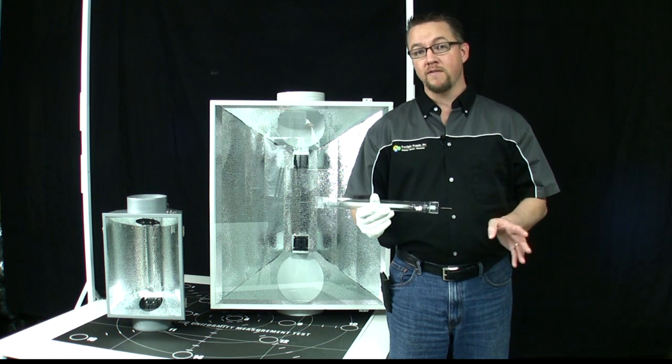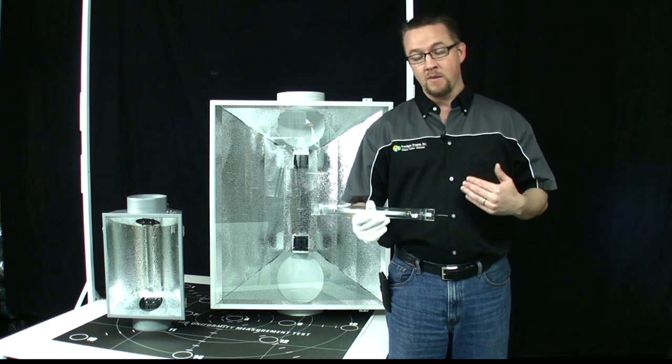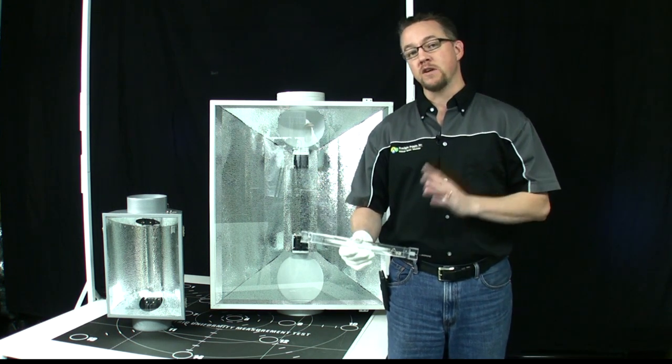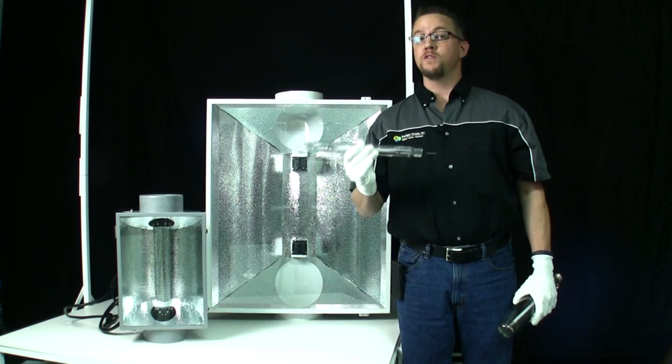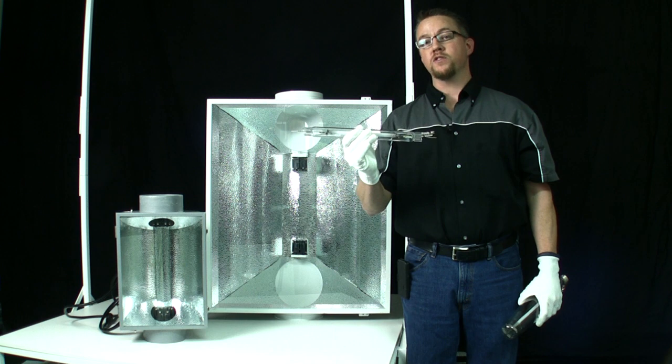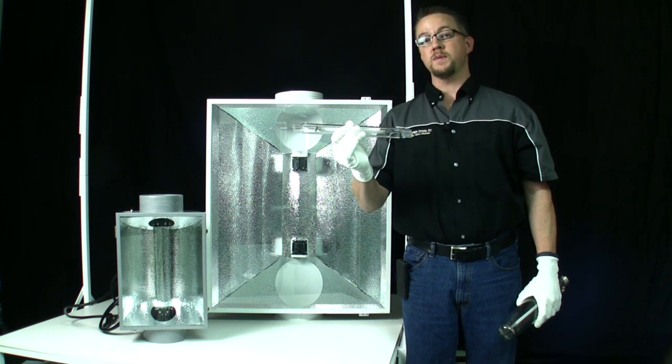But more importantly, the lower PAR values are an indication, in our opinion, of inherent design flaws in the GROW 1 and Phantom DE unit. Primarily their inability to prevent moving air from passing over the quartz outer jacket of the 1000 watt double-ended HPS lamp.